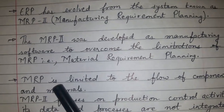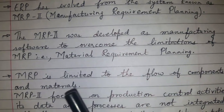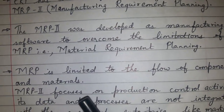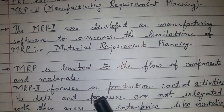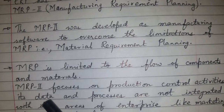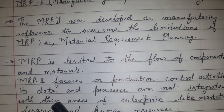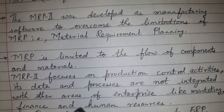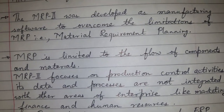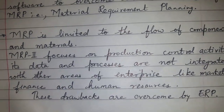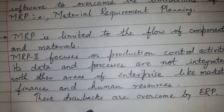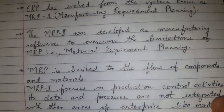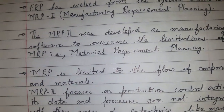MRP was limited to the flow of components and materials, whereas MRP2 was focusing on production control activities. But its data and processes are not integrated with other areas of the enterprise like marketing, finance, and human resource. So because of these limitations, ERP has come up to overcome these drawbacks.